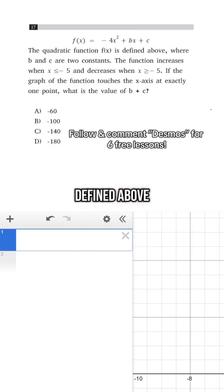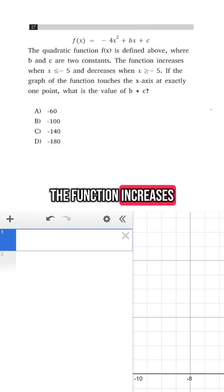We're told the quadratic function f(x) is defined above where b and c are two constants. The function increases when x is less than or equal to negative 5 and decreases when x is greater than or equal to negative 5. If the graph of the function touches the x-axis at exactly one point, what is the value of b plus c?